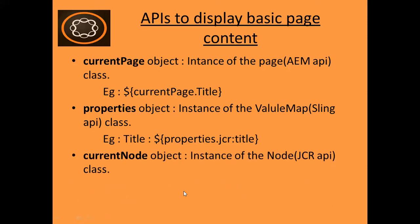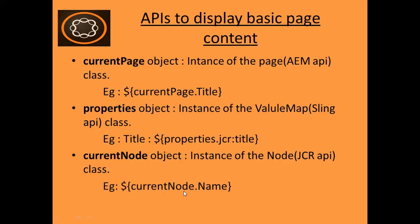The third is the currentNode object. It is the instance of the Node class which comes under the JCR API. For example, in the expression you can write currentNode.name.